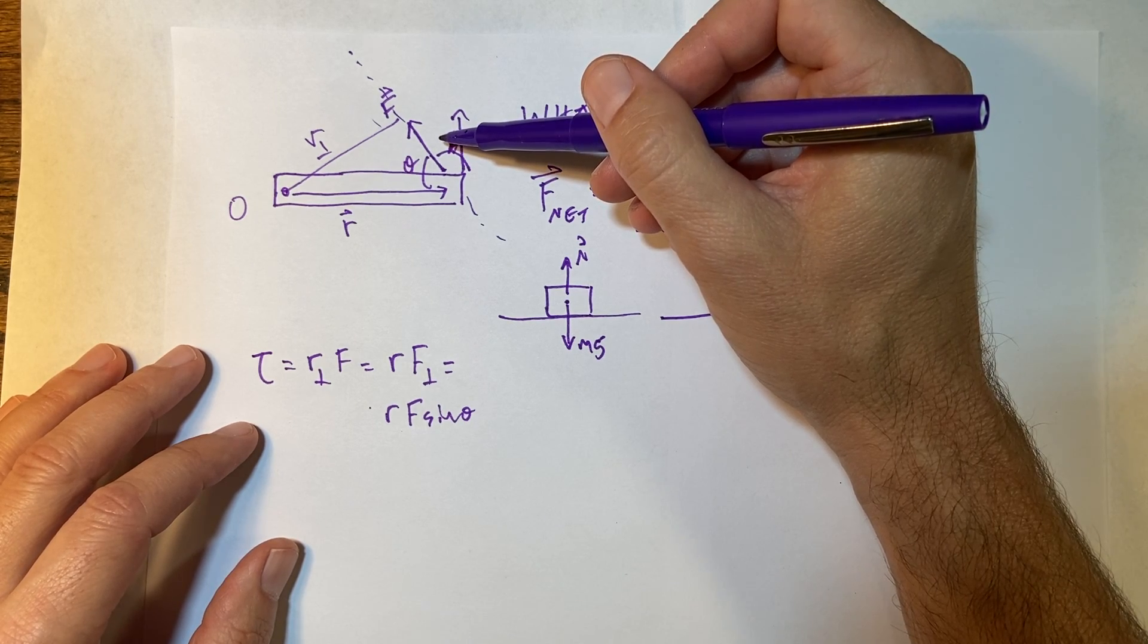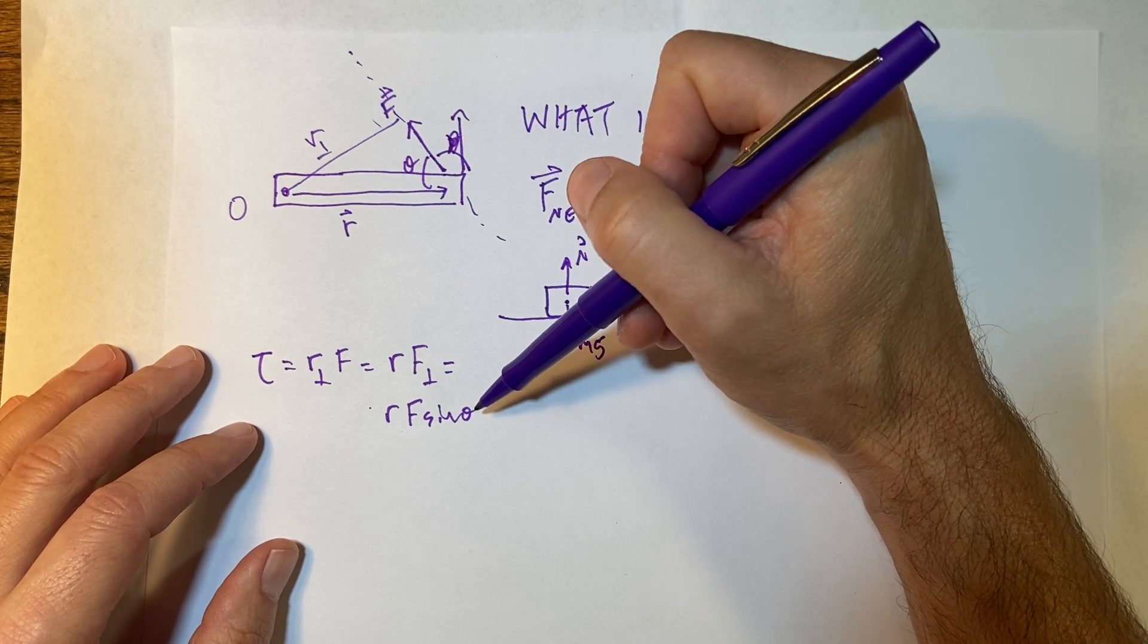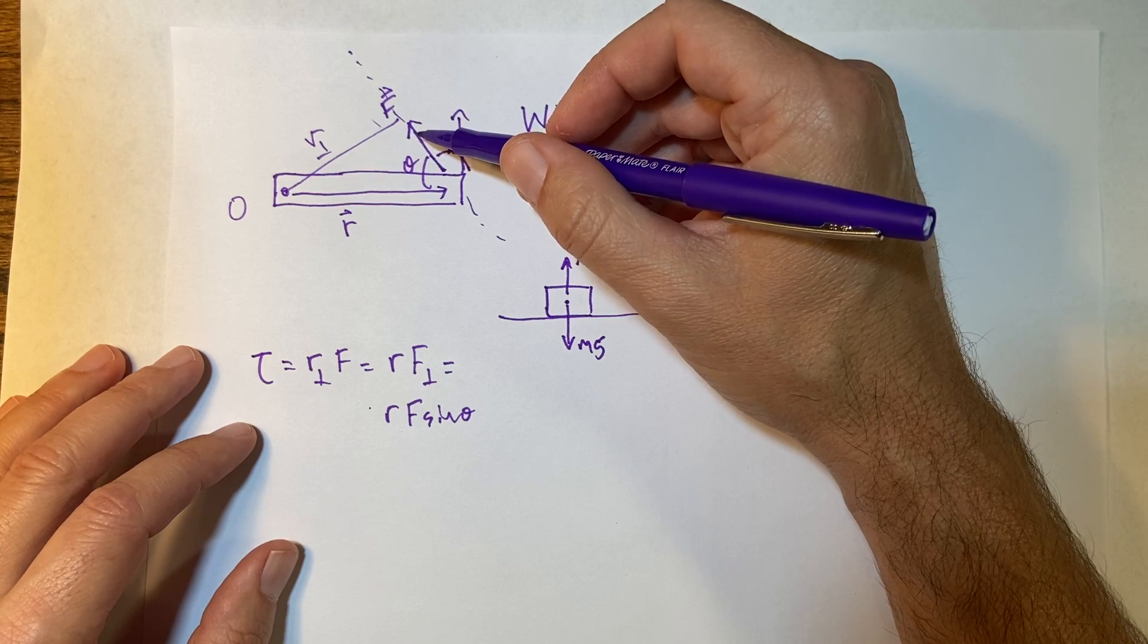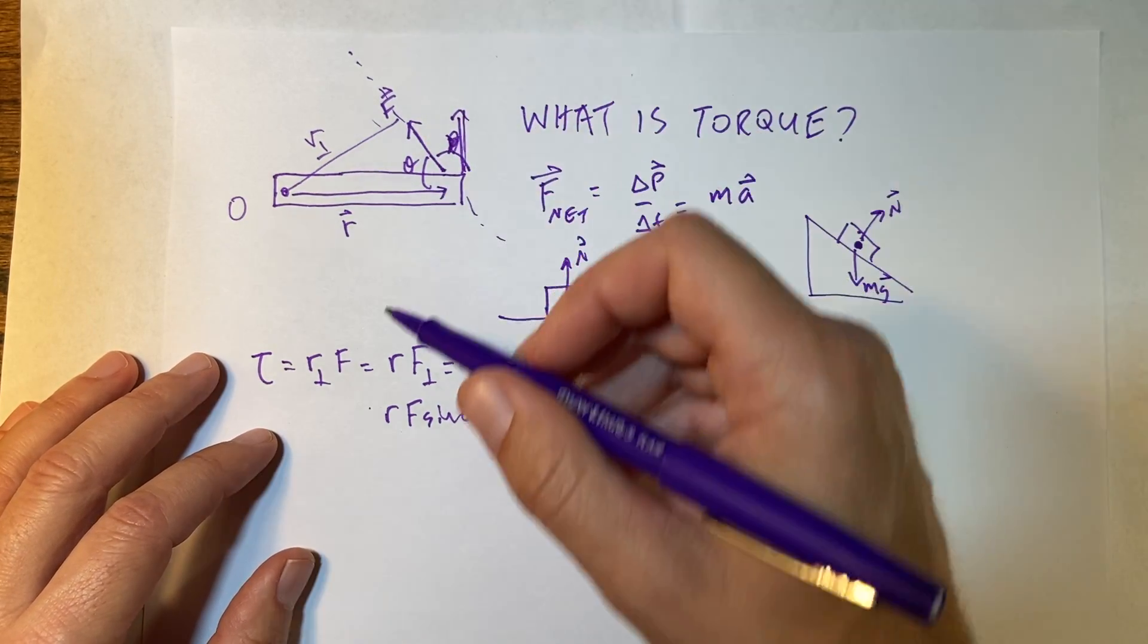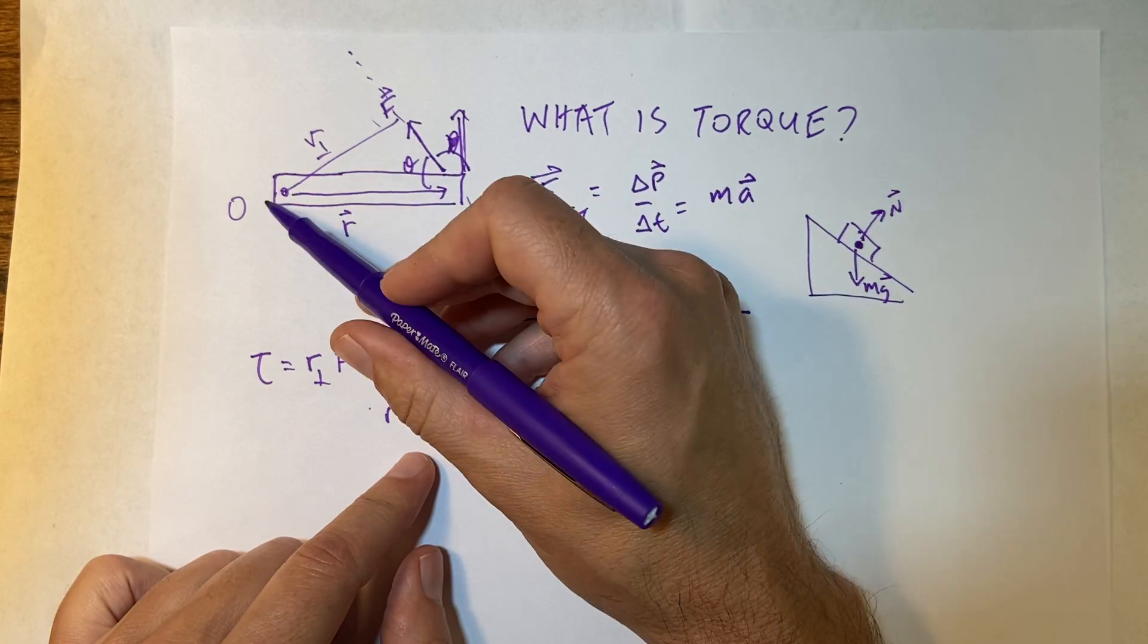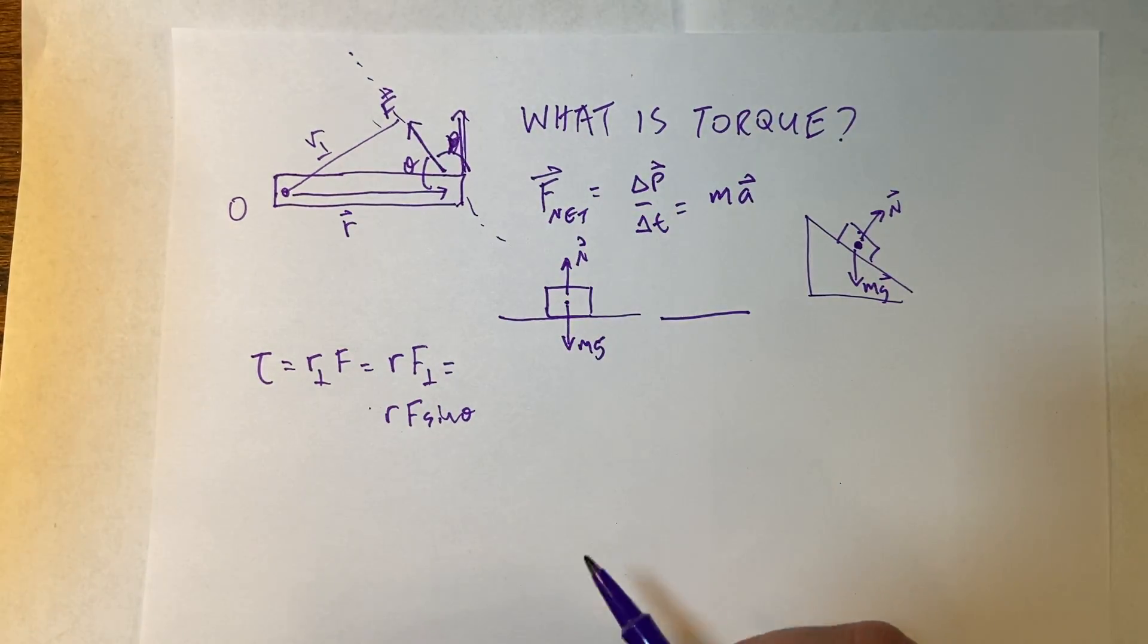I'm going to just think for a second. I think that's right, because sine theta. Yeah. Okay, so, and that would be, this component would be R sine theta. Okay. And then I could just use the magnitude of R and the magnitude of F and the angle between them.